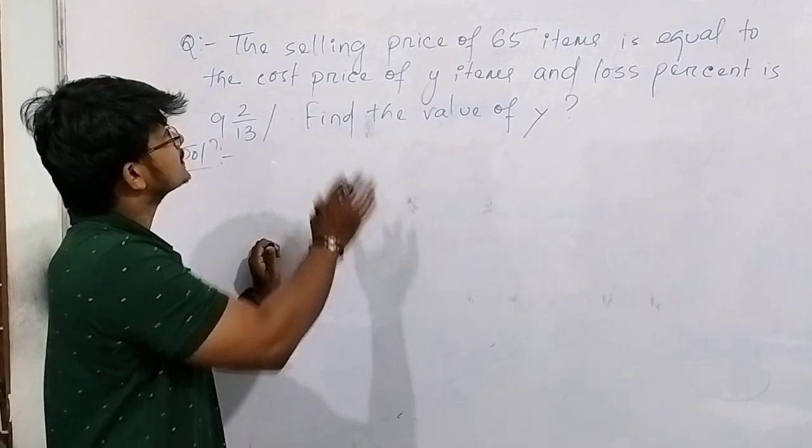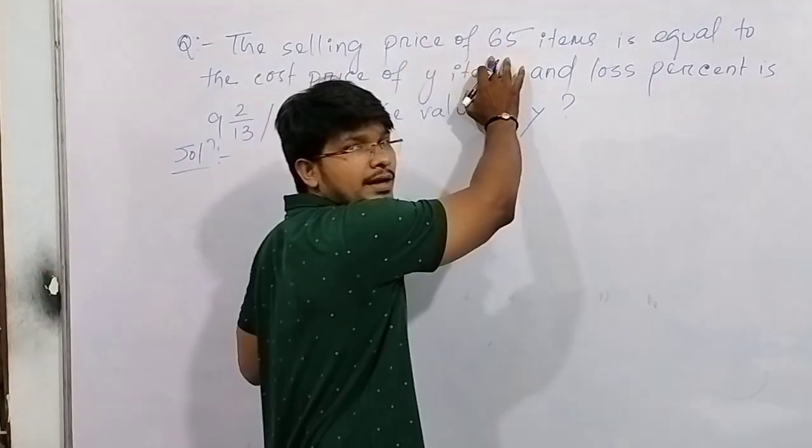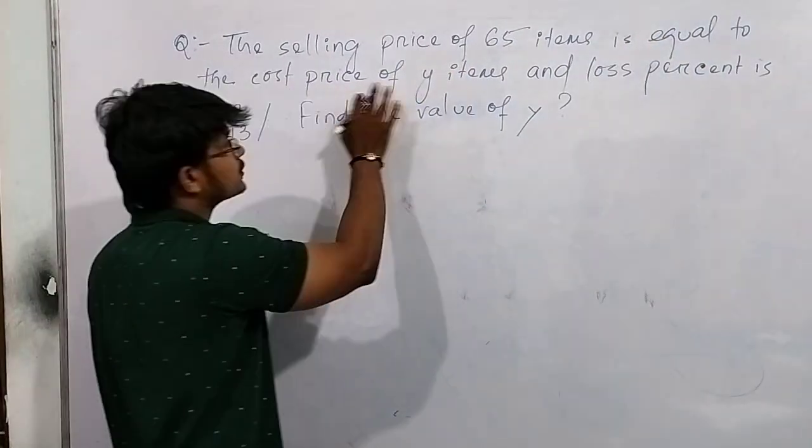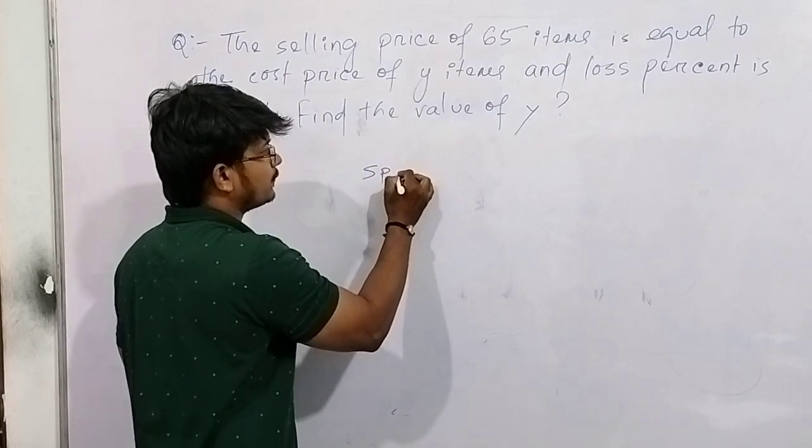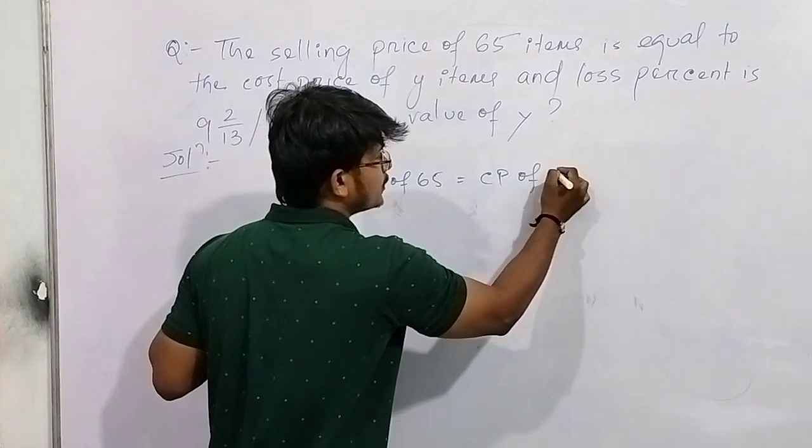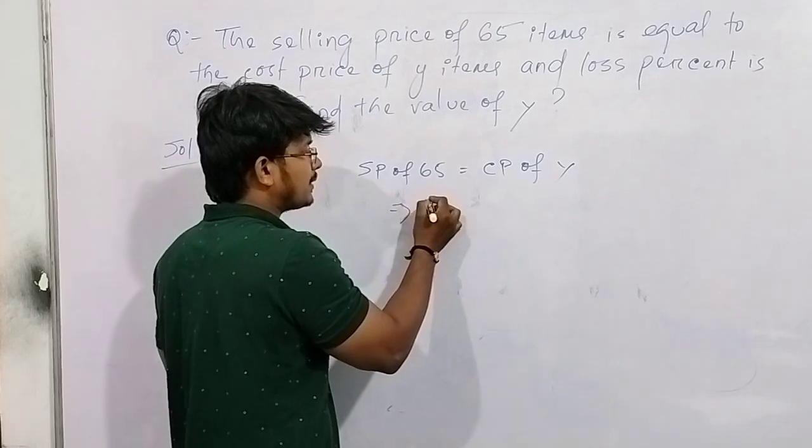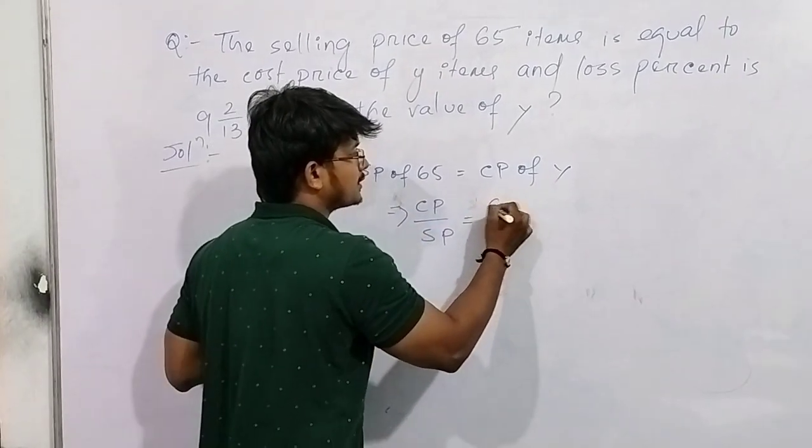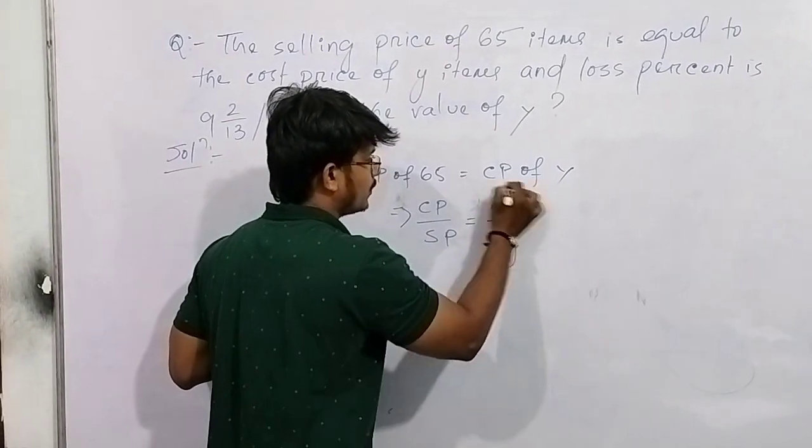The question says the selling price of 65 items is equal to the cost price of y items. So SP of 65 is equal to CP of y items. So we can write CP by SP, CP by SP is equal to 65 upon y.